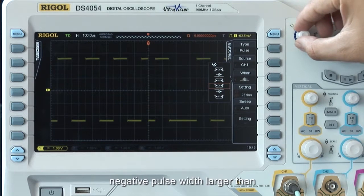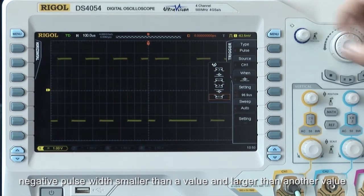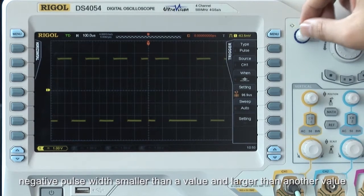Other options include negative pulse width larger than a value, negative pulse width smaller than a value, and negative pulse width between two values.